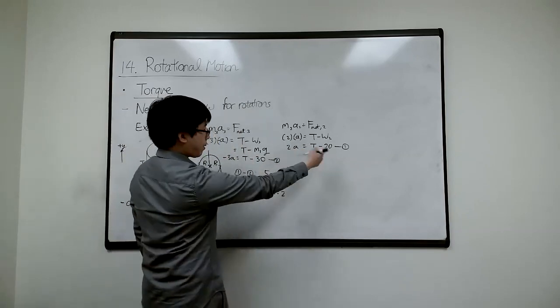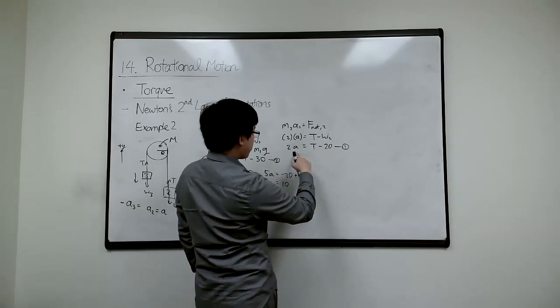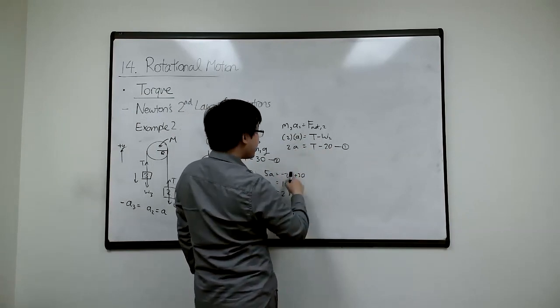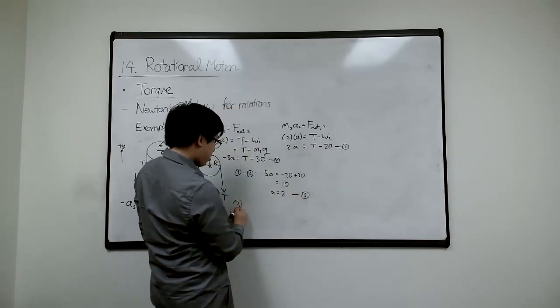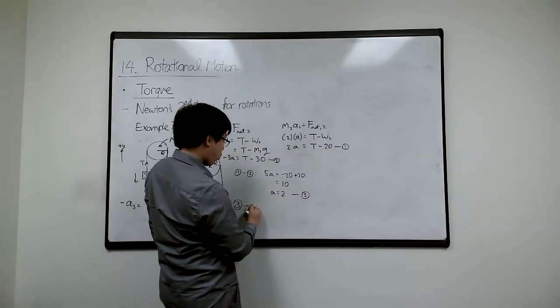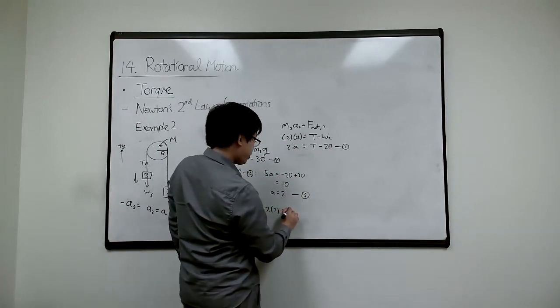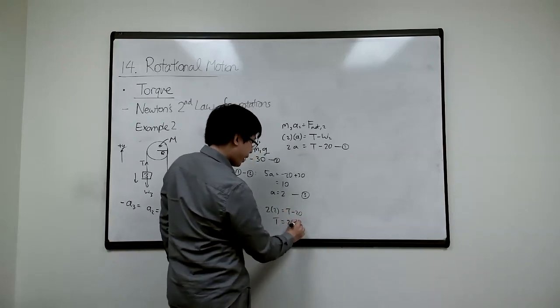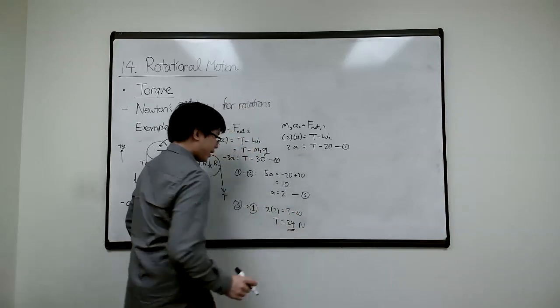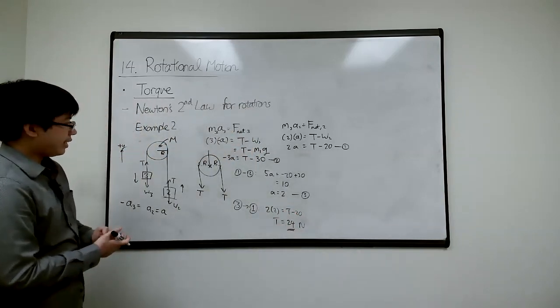What is T? You can plug in either one and double check you'll get the same answer. So A here is - I can take, I'll call this 3. And 3 substitute back into 1. We get 2 times 2 equals T minus 20. So that gives T equals 24, 24 newtons.